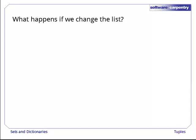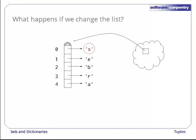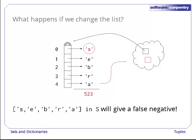But what happens if we now change the contents of the list? Suppose, for example, that we change the first letter from z to s. The hash function's value is now 523 instead of 532, which means that the modified list belongs in a different place in the set. This is bad — very bad. If we now ask, 'Is the list containing s, e, b, r, and a in the set?', the answer will be no, because the reference to the list isn't stored in the location that our hash function tells us to look.